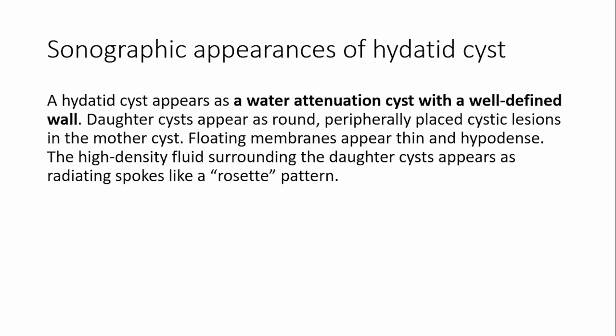These features can alert you that this could be a hydatid cyst. A hydatid cyst appears as a water-attenuation cyst with a well-defined wall. Daughter cysts appear as round, peripherally placed cystic lesions in the mother cyst. Floating membranes appear thin and hypodense. The high-density fluid surrounding the daughter cyst appears as radiating sparks, like a rosette pattern.